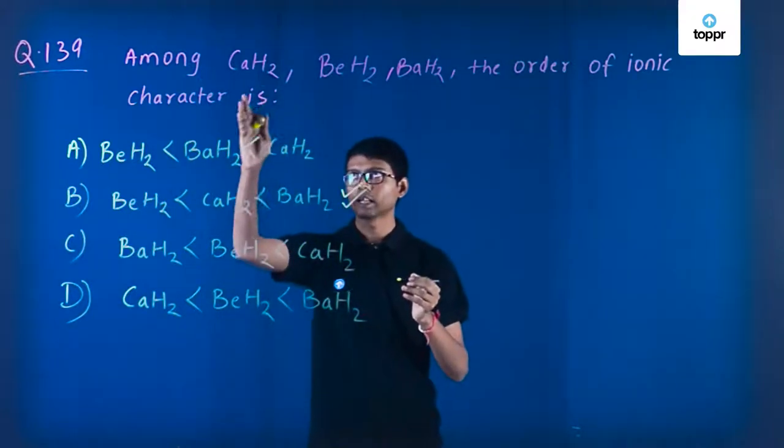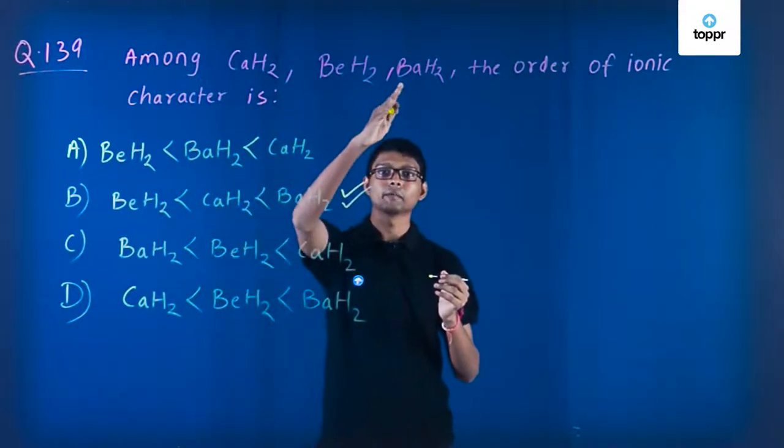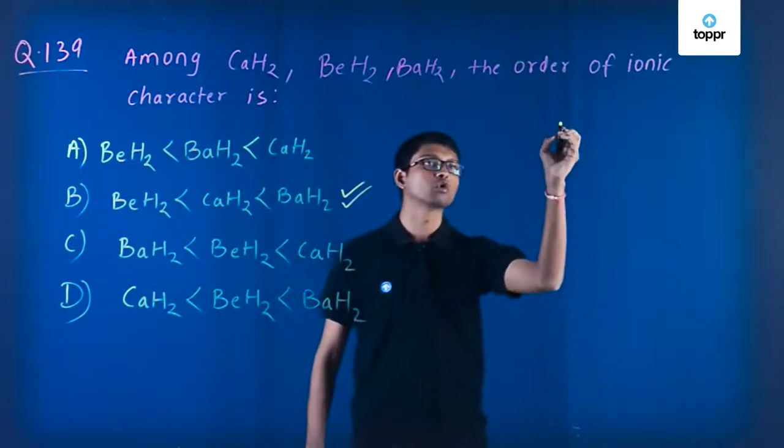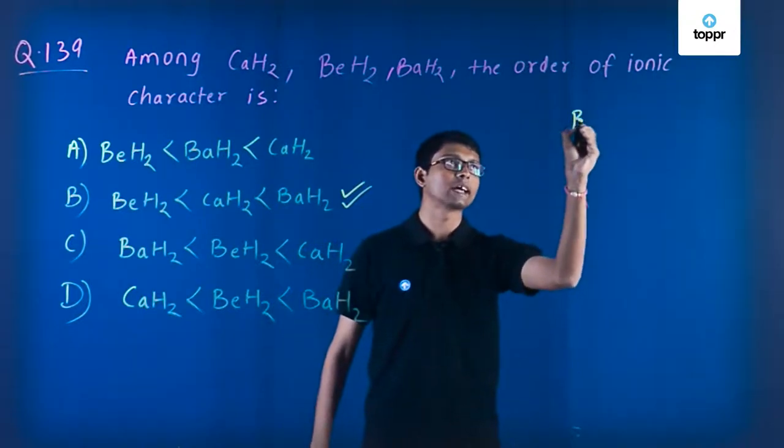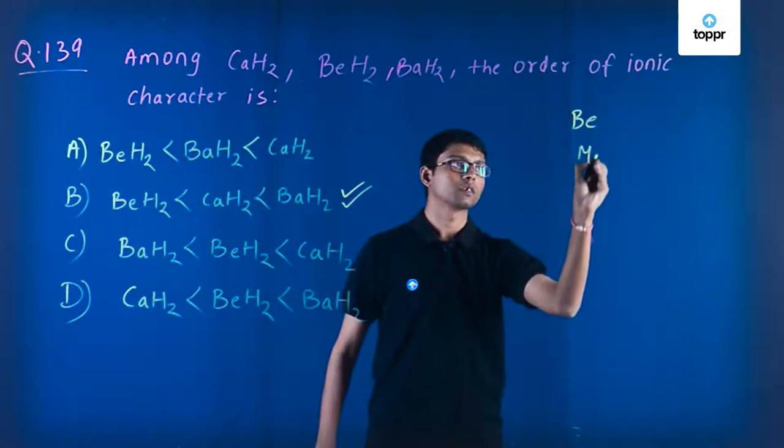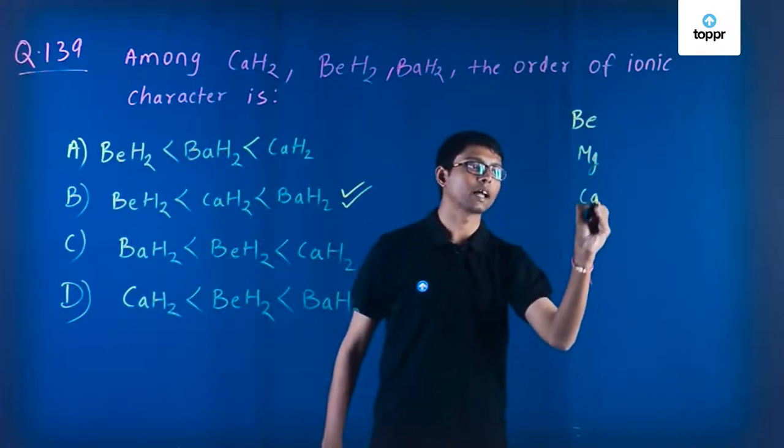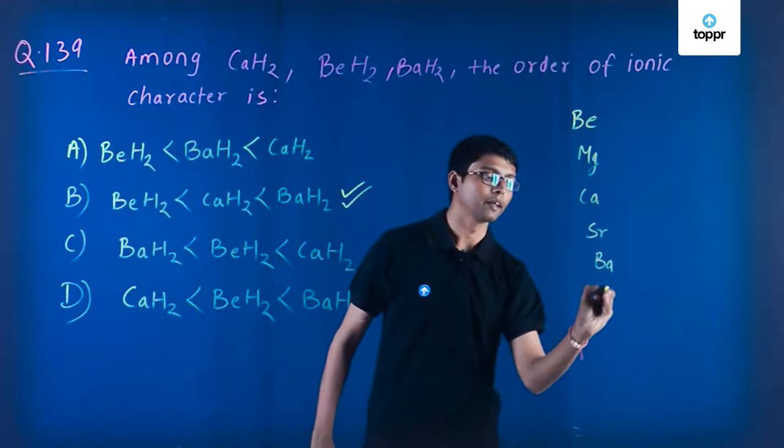As you can see, calcium, beryllium, and barium are all Group 2 elements. Group 2 consists of beryllium, magnesium, calcium, strontium, barium, and radium - these six elements.